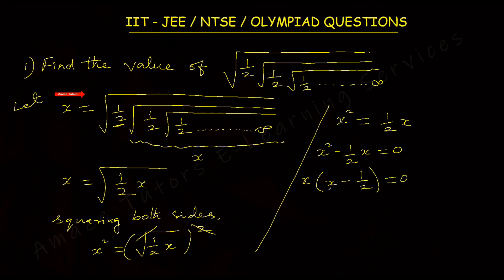Using the zero product property: if the product is 0, then any one of them or both should be 0. So either x equals 0, or x minus 1/2 equals 0, giving x equals 1/2.